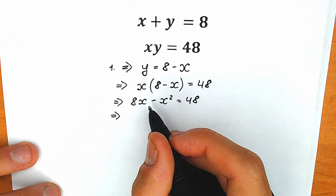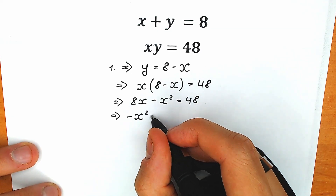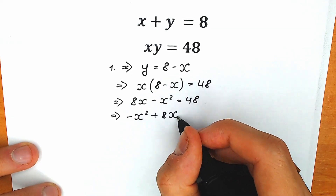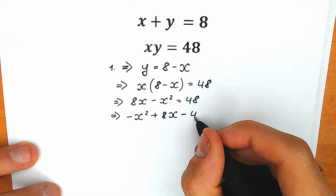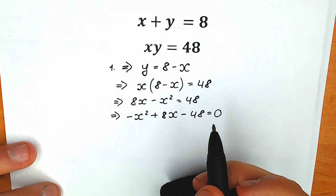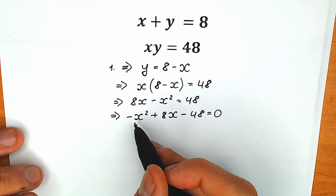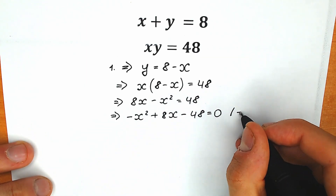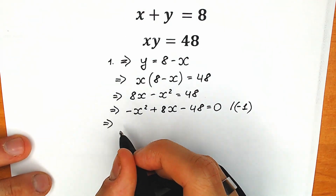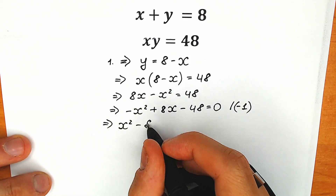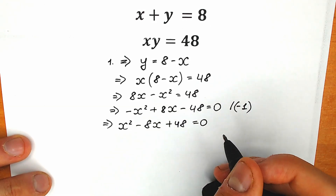On the first position let's write minus x squared, on the second position plus 8x, and from the right side, minus 48 equals 0. Now, because a lot of students prefer a positive leading coefficient in the classic form ax squared plus bx plus c, let's multiply both sides by minus 1. So we have x squared minus 8x plus 48 equals 0. This is our quadratic equation.